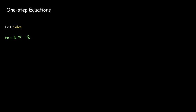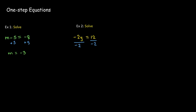In the first example, I'm trying to get m by itself. There's a 5 connected to m via subtraction, so if I have a negative 5 and a positive 5, they add to make zero. I'll add 5 to both sides, which gives me the solution m equals negative 3. In the next example, I want to get y by itself. There's a negative 2 connected to y by multiplication, so I undo multiplication using division — dividing both sides by negative 2 gives me y equals negative 6.